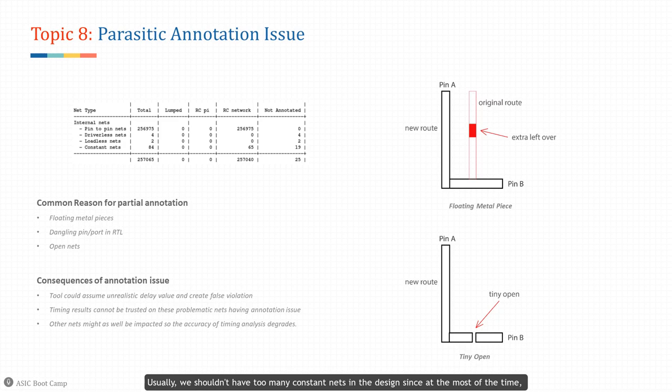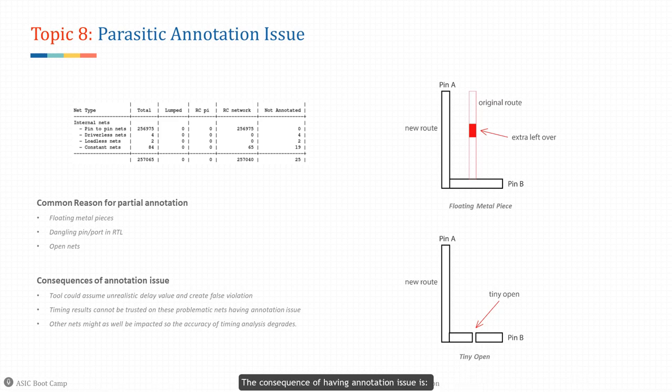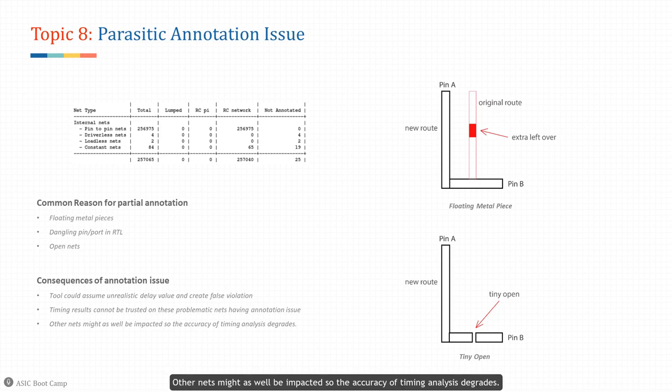Constant nets are not that concerning since they are quite static, but we should verify they are expected. We shouldn't have too many constant nets in the design since constant usually means redundancy, and logic synthesis tools work hard to optimize away constant logic. The consequence of having annotation issues is that the tool could assume unrealistic delay values and create false violations — timing results cannot be trusted on these problematic nets, and other nets might be impacted too. Thus we should try to eliminate as much annotation issue as possible to make STA analysis reliable.